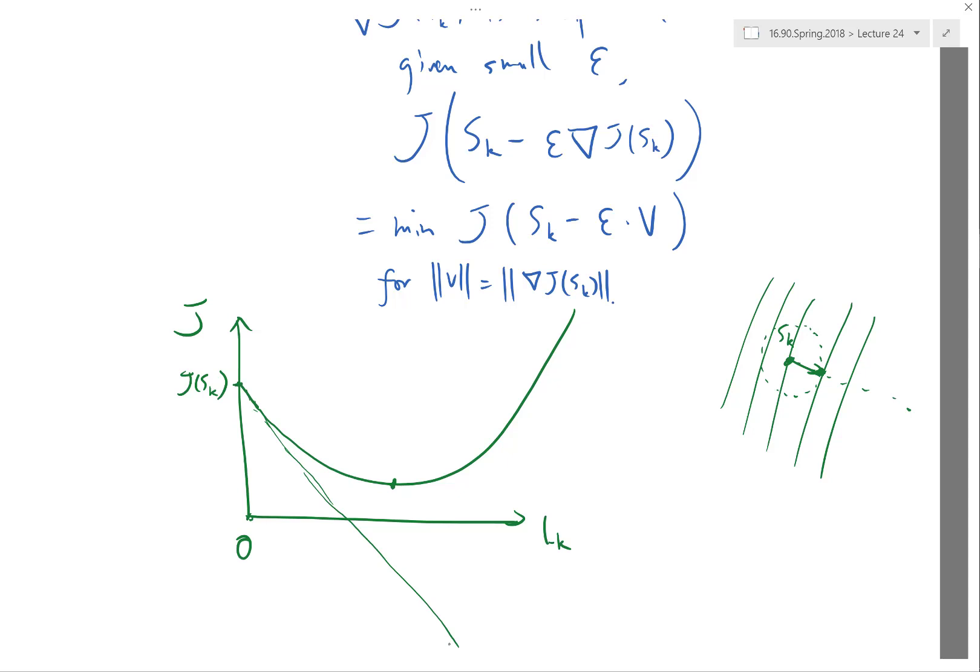If you keep only the first order Taylor series in your approximation, the untamed function keeps decreasing. To get a minimum you need at least the second order derivative. The second order derivative determines how far you can go.